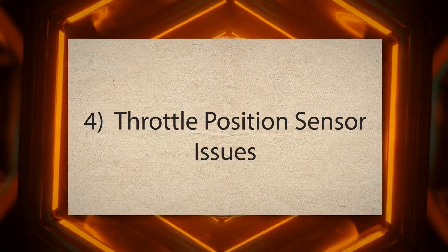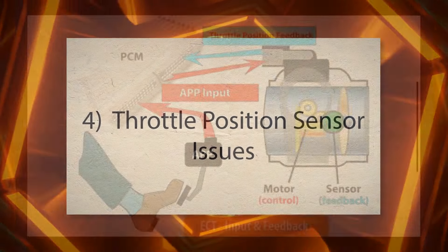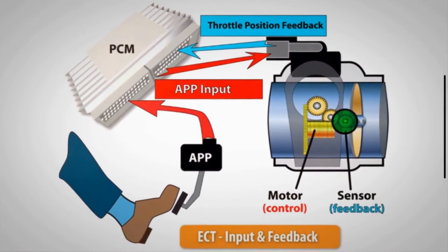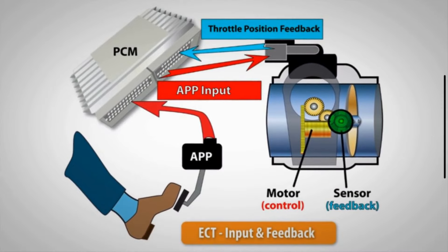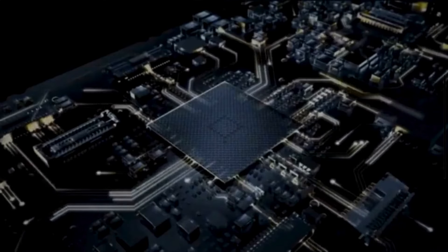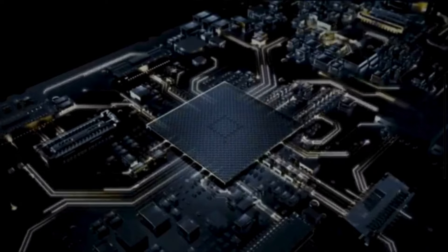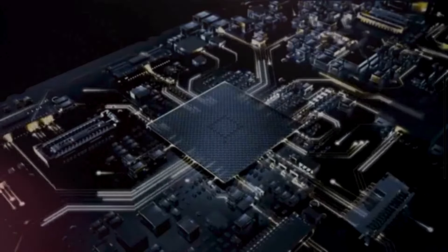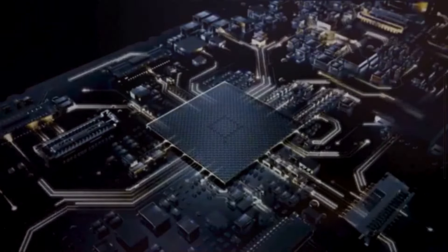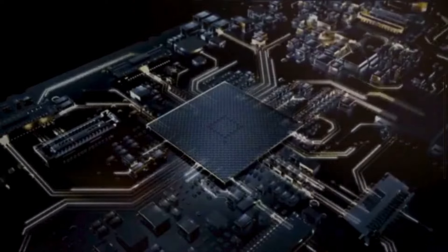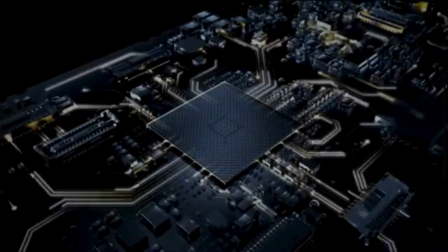4. Throttle Position Sensor Issues. The throttle position sensor monitors the position of the throttle valve and sends this information to the engine control unit. A malfunctioning throttle sensor can send erratic signals which may cause the engine control unit to mismanage the throttle position and idle speed.